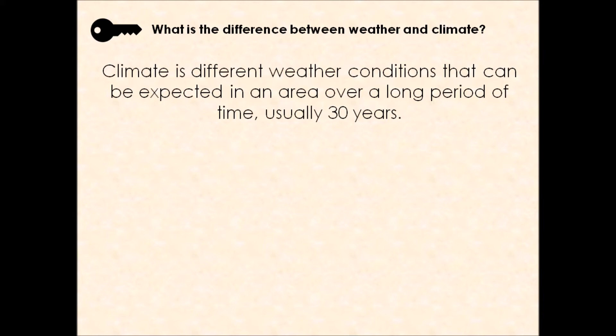When we talk about climate, we mean the different weather conditions that can be expected in an area over a long period of time — typically around 30 years. For example, we might look at London in the UK and record temperature and precipitation every day for about 30 years, then calculate the average conditions for each month. That gives us the climate of that location.